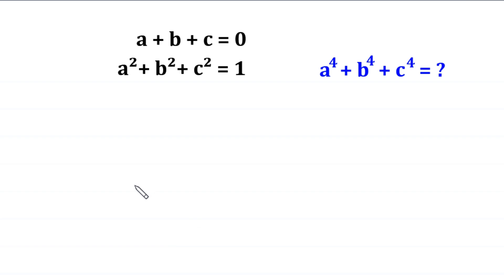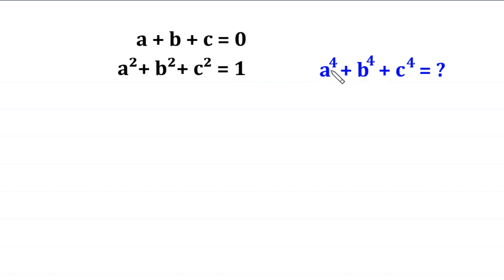Hello everyone, you are welcome to how to solve this very nice system of equations. a plus b plus c is equal to 0, and a squared plus b squared plus c squared is equal to 1. Our job is to find all possible values of a to the power 4 plus b to the power 4 plus c to the power 4. So, let us start.